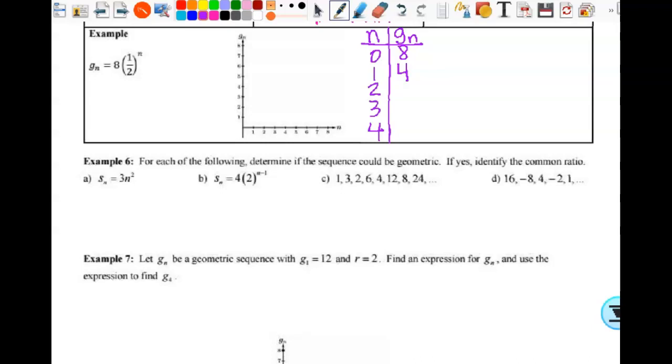I substitute in two. One half squared is one fourth. And eight times one fourth is two. When I have g sub three, that's gonna be eight times one half to the third power. What is one half to the third power? One eighth. So this is eight times one over eight, and I get one. G sub four is gonna be eight times one half to the fourth power, which is one over 16. So my answer is one half.